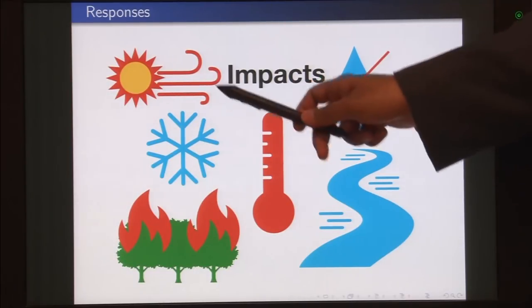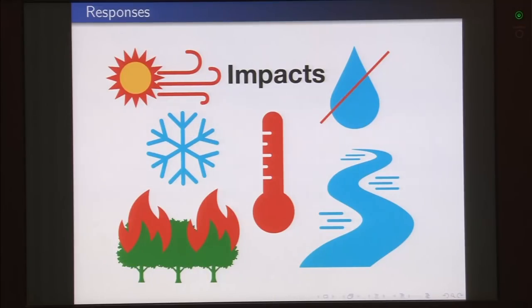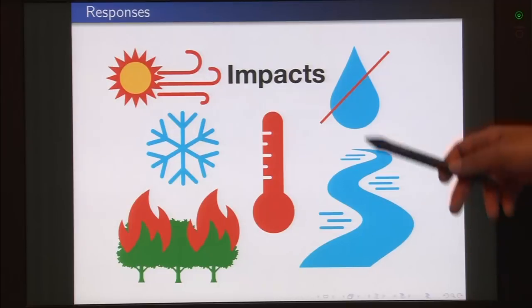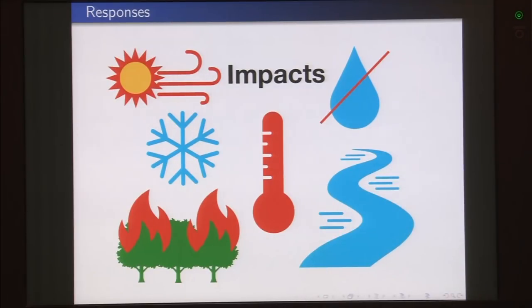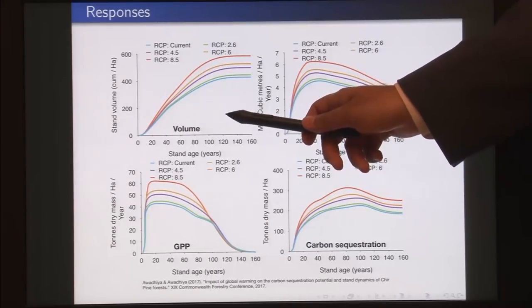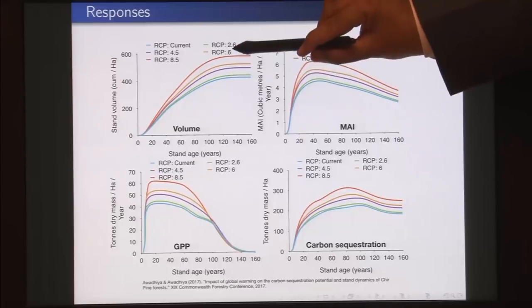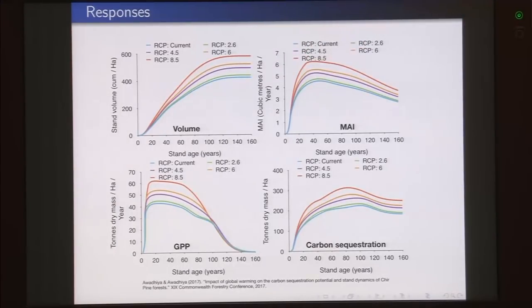We will observe a number of impacts: more hot winds, ice reduction, temperature increases, changes in rainfall patterns due to wind pattern changes, situations of floods or droughts, and more forest fires. These days it is possible to simulate all of these impacts. We are seeing the results of one such simulation looking at different levels of global warming — represented by representative concentration pathways — on the volume of a forest stand, mean annual increment, gross primary productivity, and carbon sequestration potential.